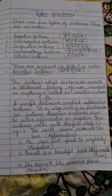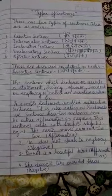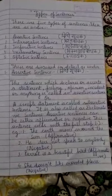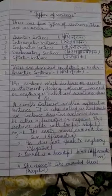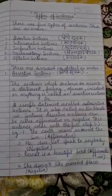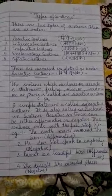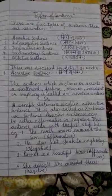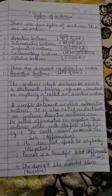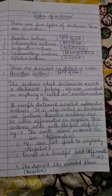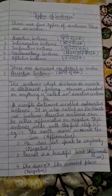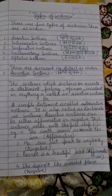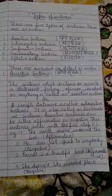The first one is assertive sentence. A sentence in which we simply state or declare a statement is called an assertive sentence. The sentence which declares or asserts a statement, feeling, opinion, incident, or anything is called an assertive sentence. The other name of assertive sentence is declarative sentence.